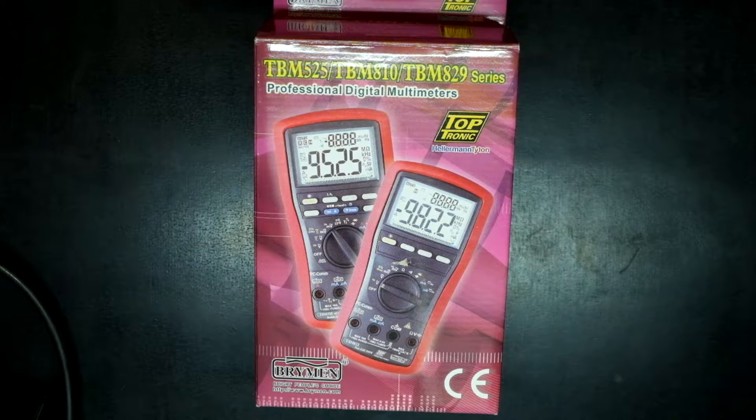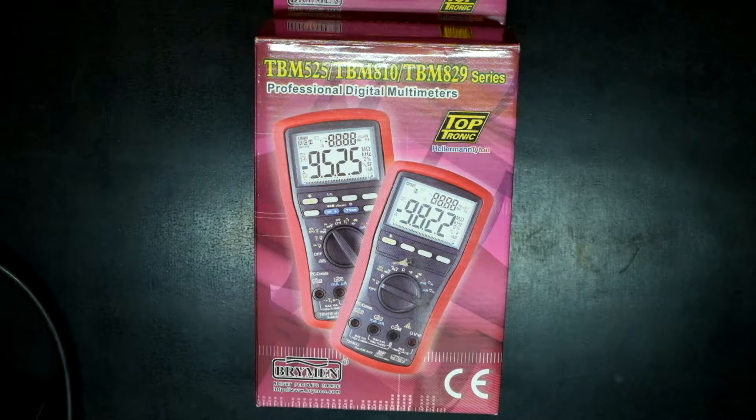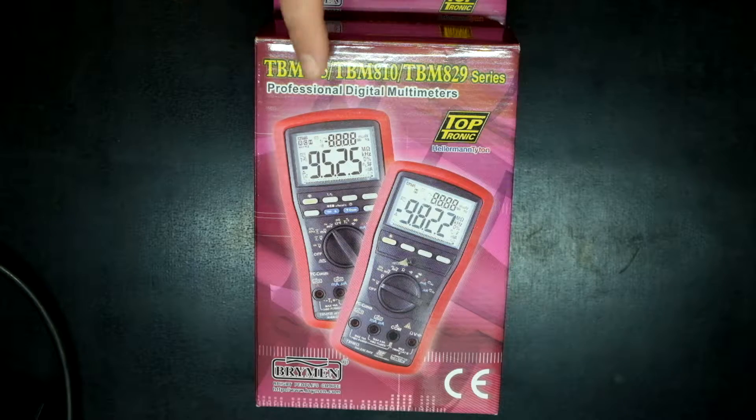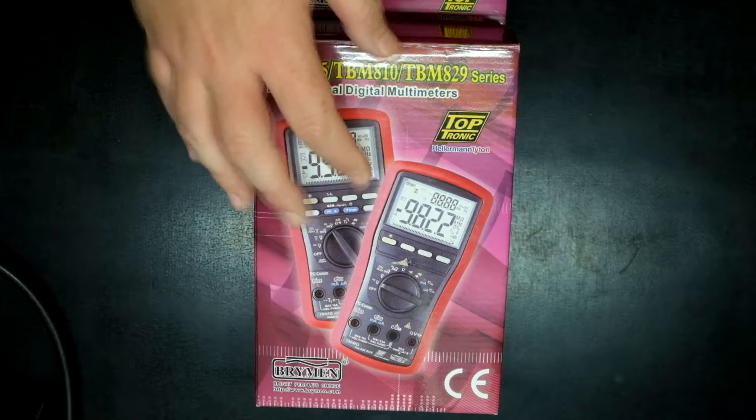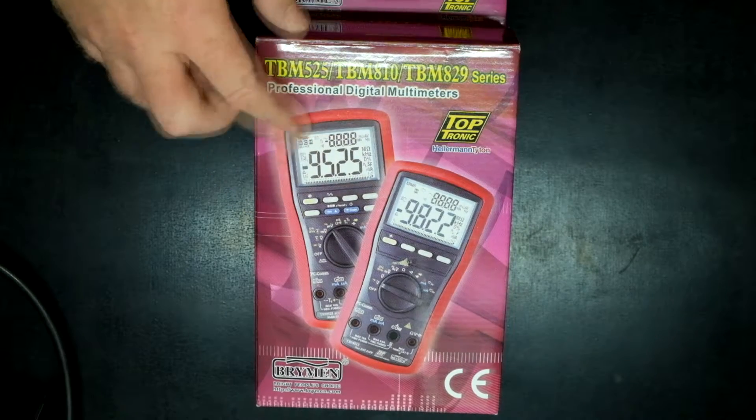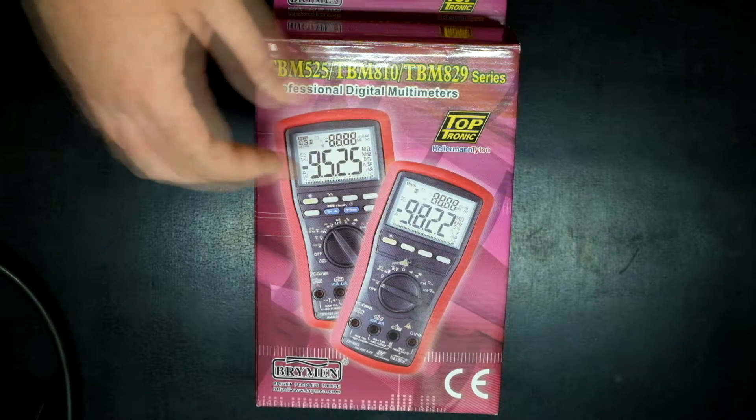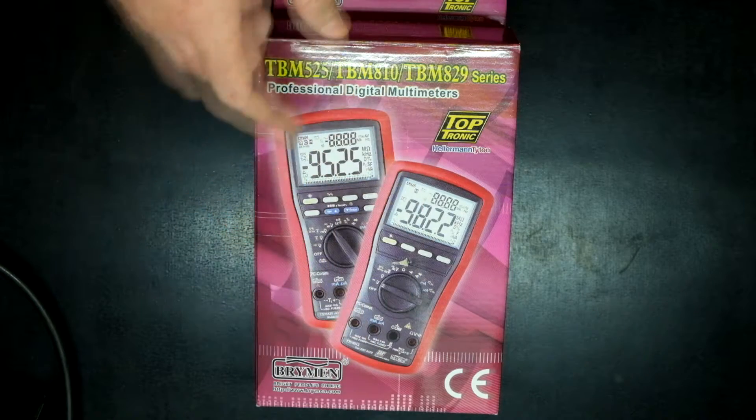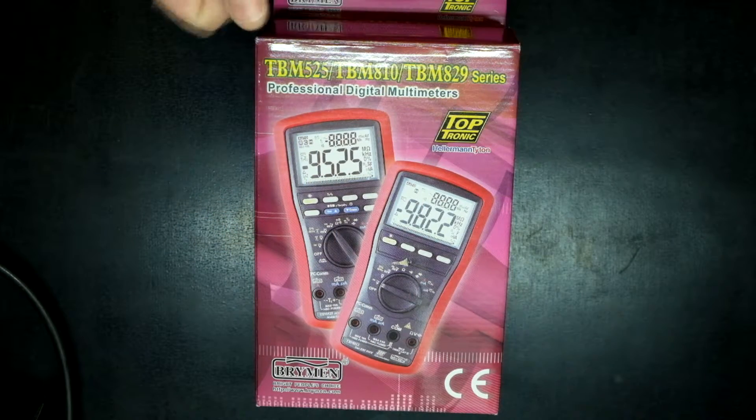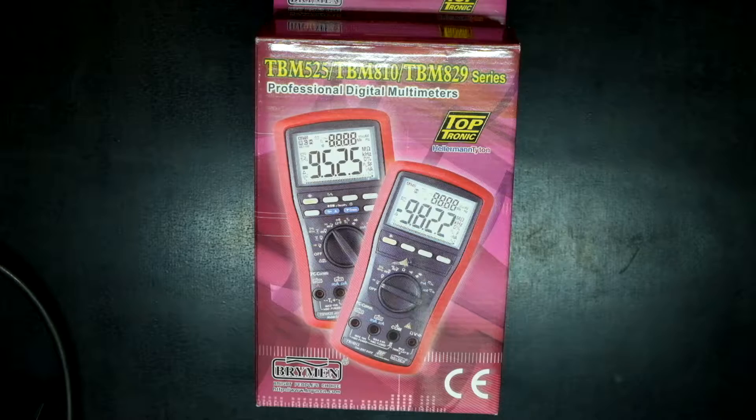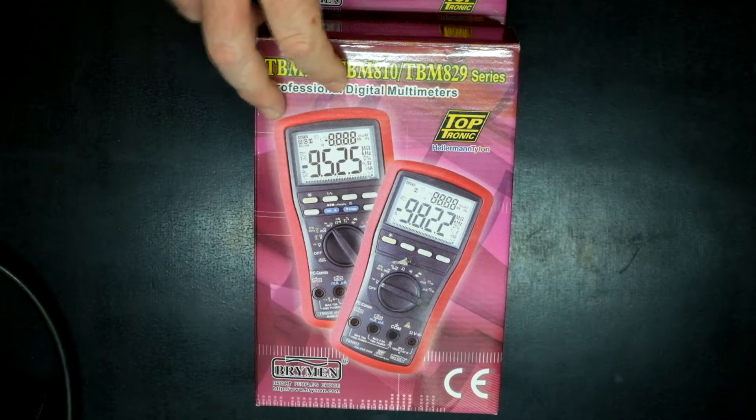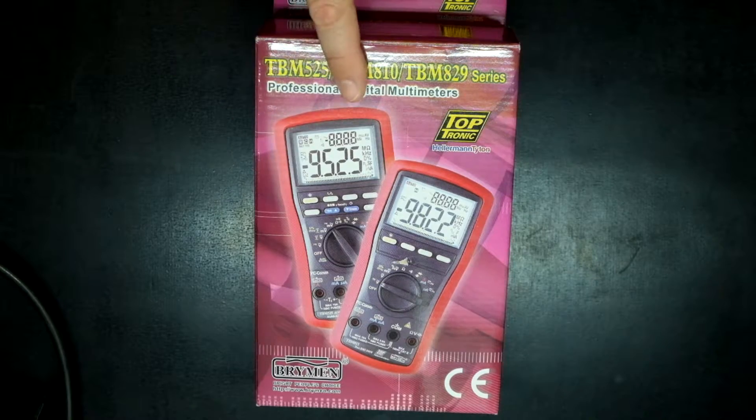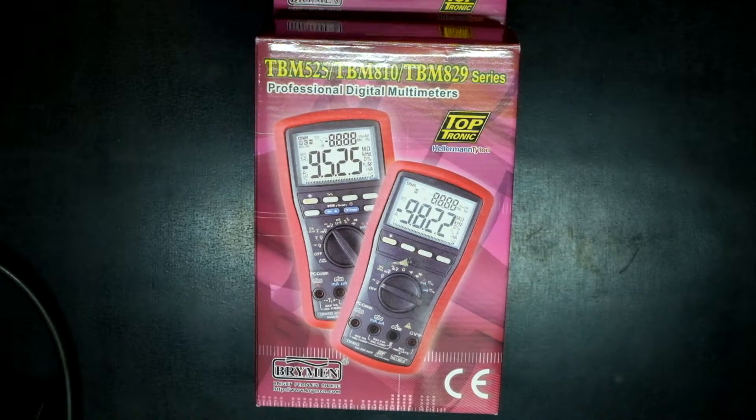Here we have the box for the TBM811 Brymen. The difference between this and my other Brymens like the TBM812 and TBM829 is that this one is not a true RMS meter. We'll do some tests and compare it to the 829 or the 812. I think we'll start comparing it to the 812 as they're more similar in the product range.